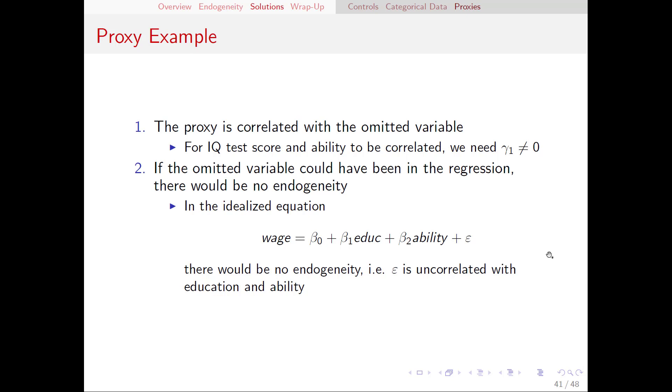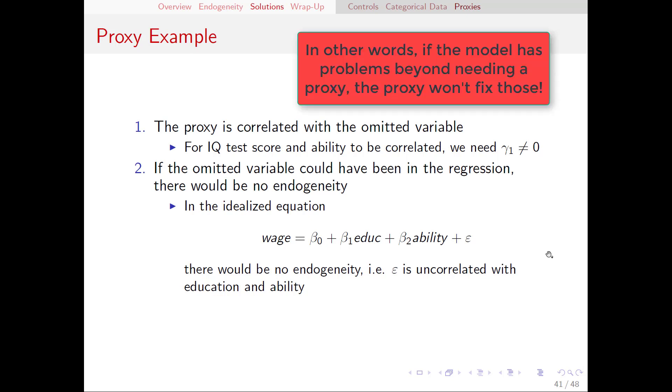This actually doesn't have anything to do with the proxy itself. This is more about the assumptions of the underlying DGP. This assumption would be violated if there were some other omitted variables out there other than ability. So this is essentially saying that we have to control for everything that is causing a problem.